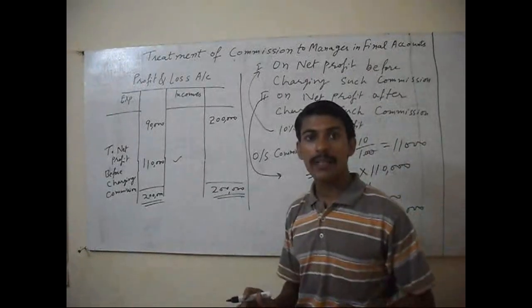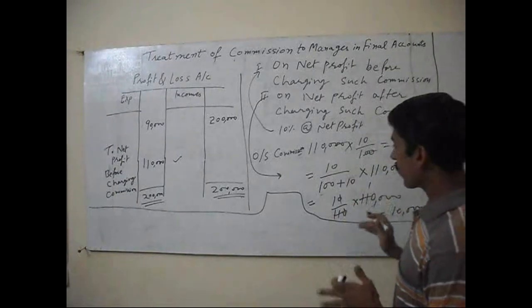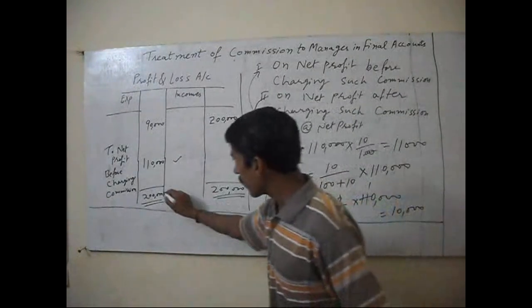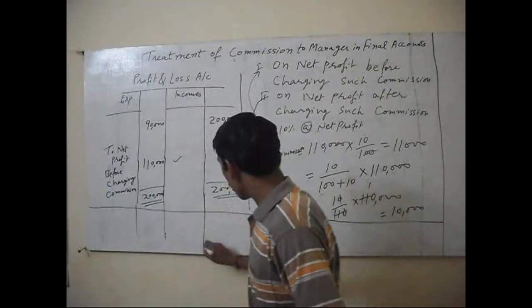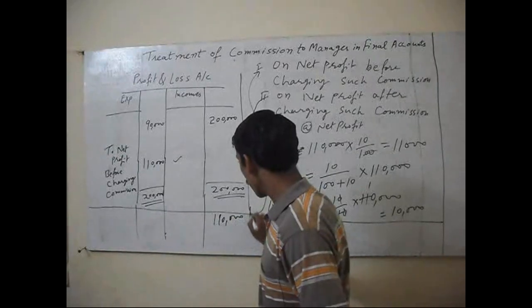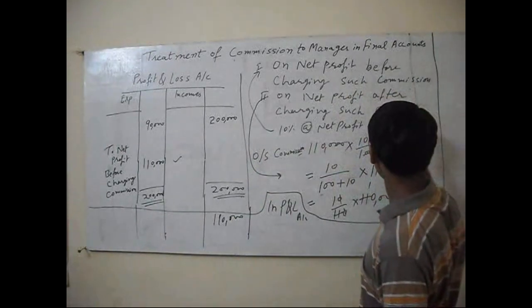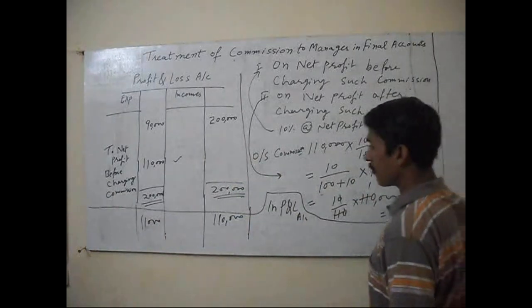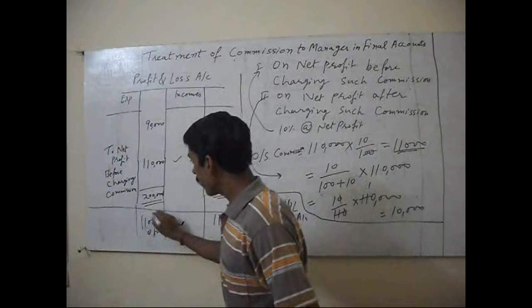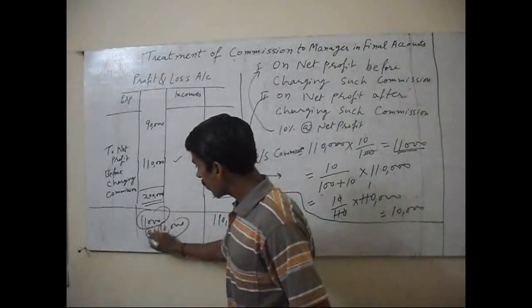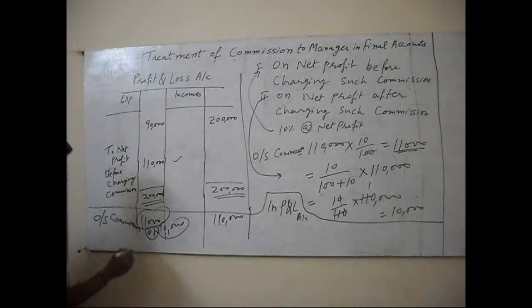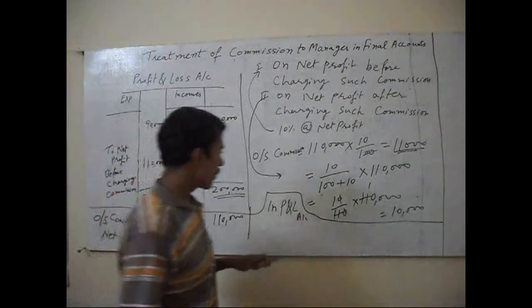Now we will treat it in the final account. For treating it in the profit and loss account, the net profit is one lakh ten thousand. If before charging such commission, we will write eleven thousand; if after charging, we will write ten thousand. We write this as outstanding commission, then we calculate our net profit after charging commission.